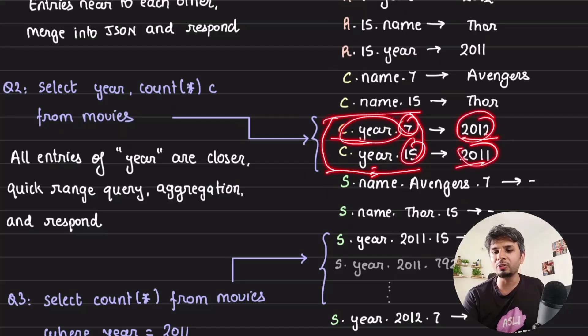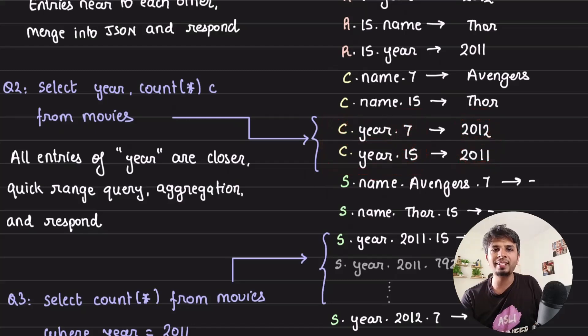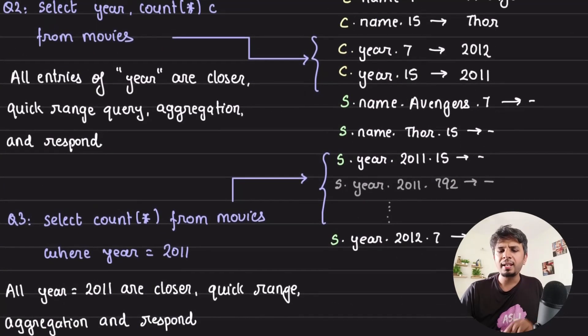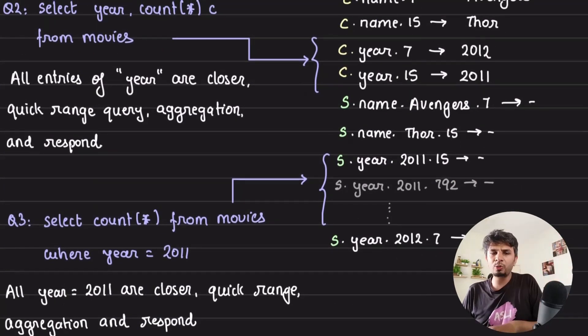So I can just go through all such key-value pairs that we have that start with C.year, and this is the document ID that I have, this is the value. So I can group by this value, count the unique document IDs that I have, and I'll have my answer. Now if you look, because these values will be packed closely to each other on disk, my lookup or my disk access are faster. I don't need to do a lot of random lookups on the disk.